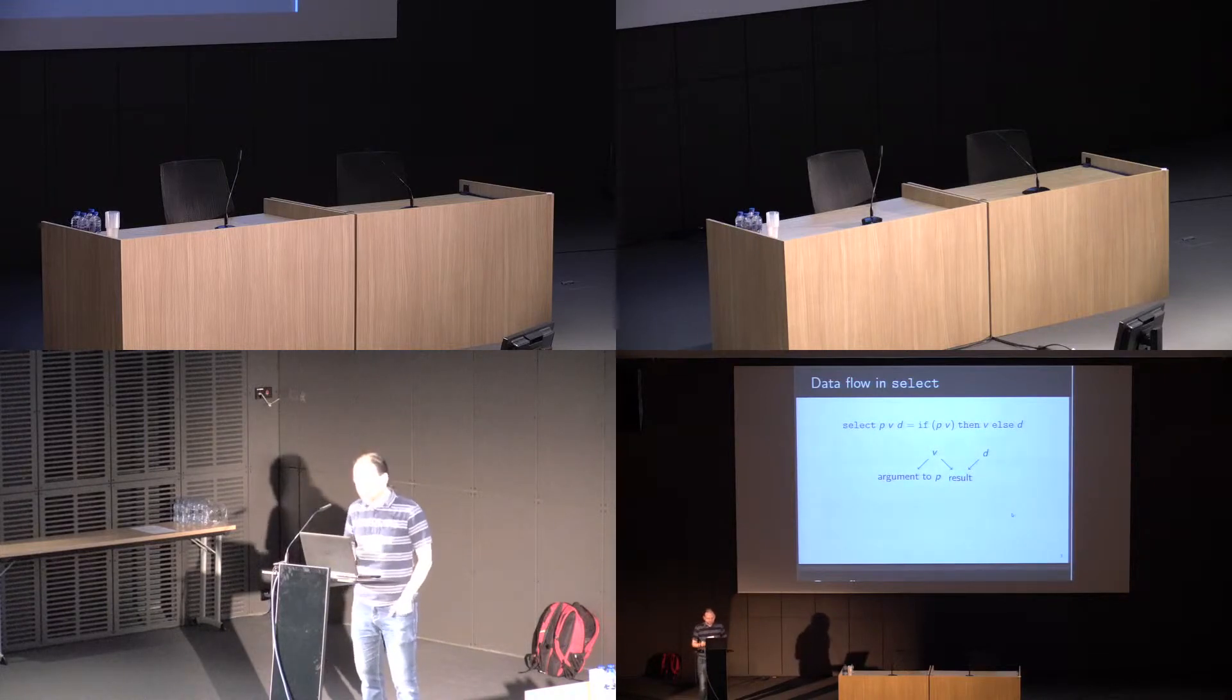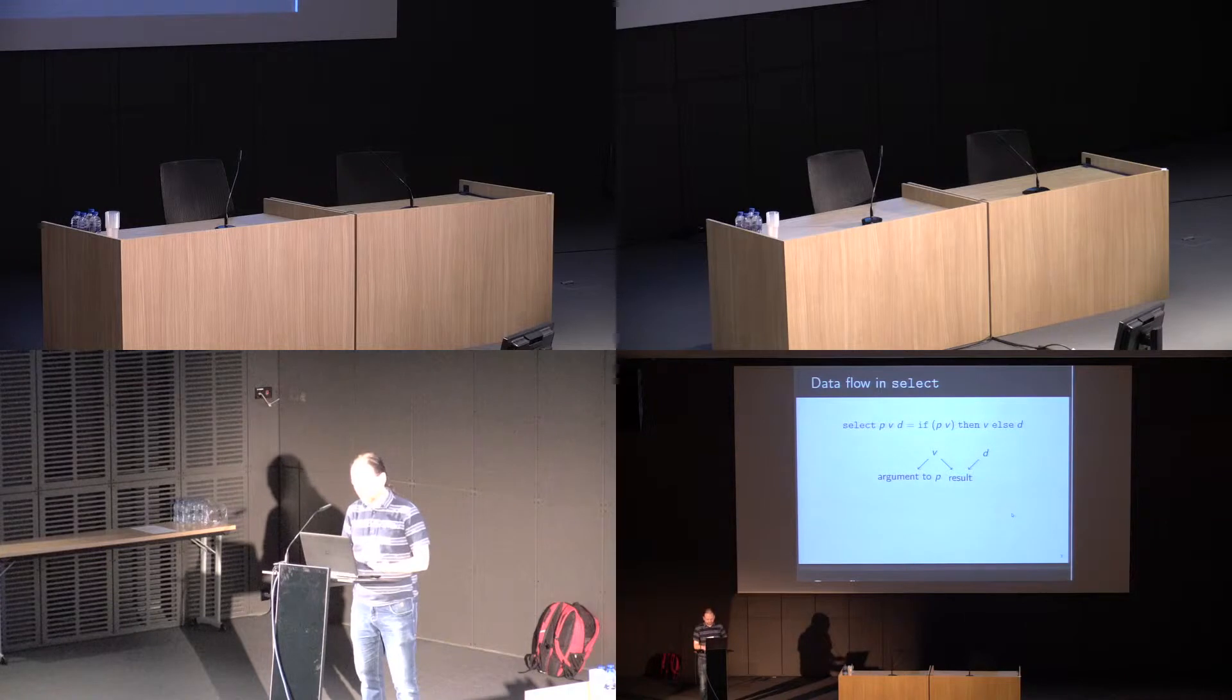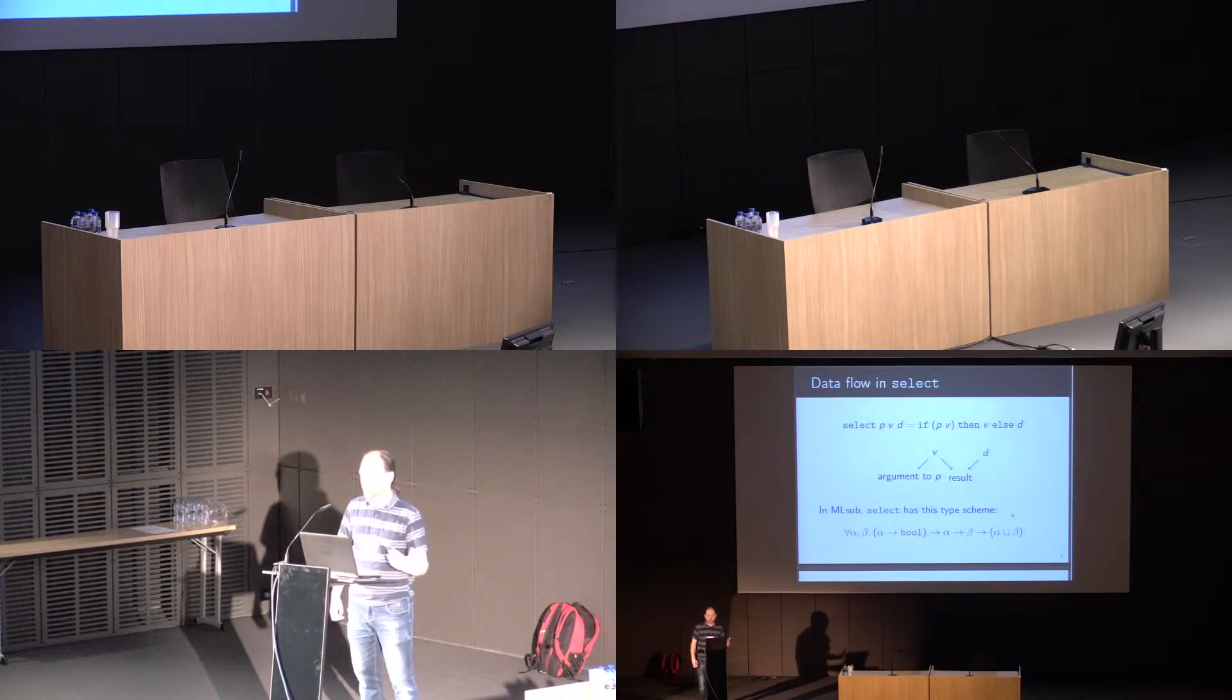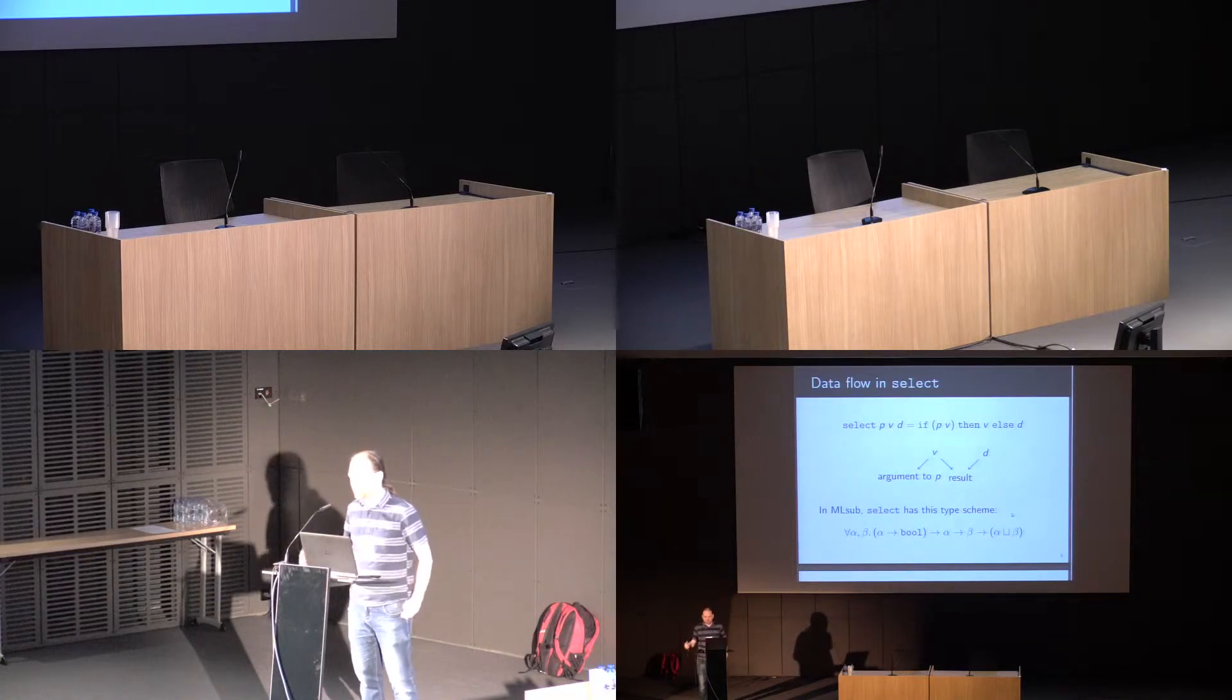In ML-sub, as I'll be describing today, we take care of the direction of data flow and we give it a more general type signature. We say select takes a predicate on alpha, an alpha which is a thing you can pass to the predicate, and the default is a beta which may be a different type, and it returns the upper bound of alpha and beta.